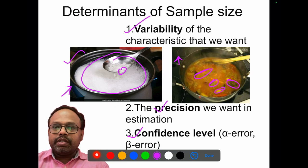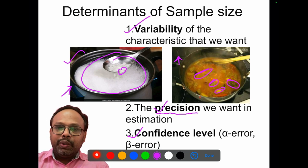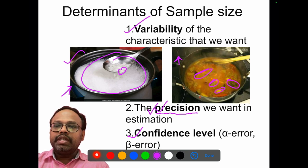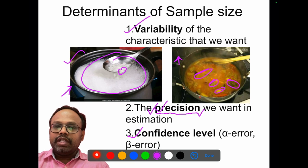Next is precision. Precision is the allowable error which we are going to allow in our study — how accurately we are going to represent our results. That is the allowable error we decide before the study.